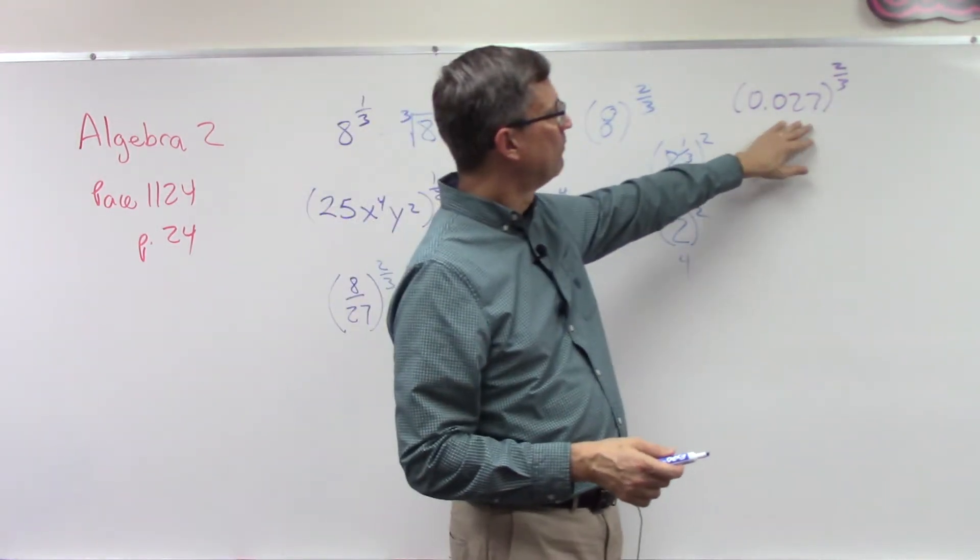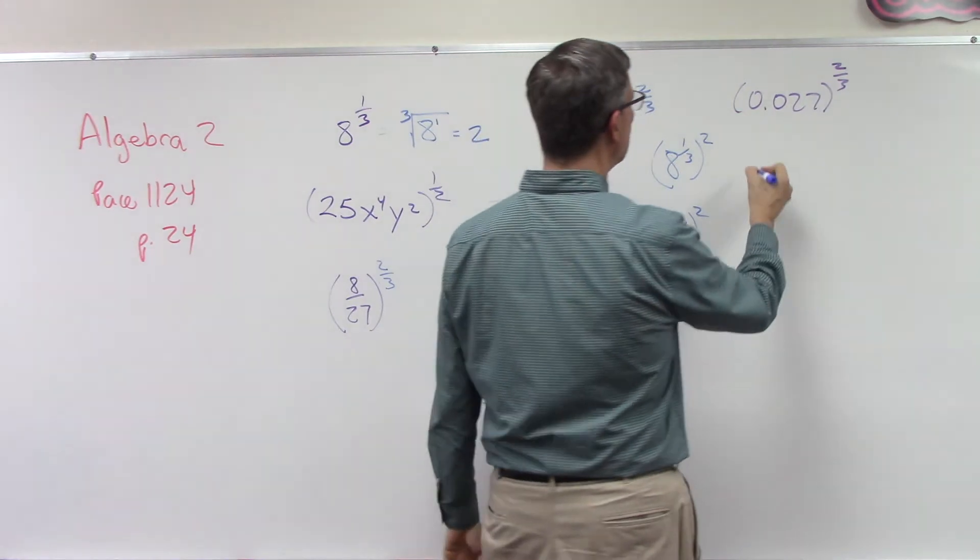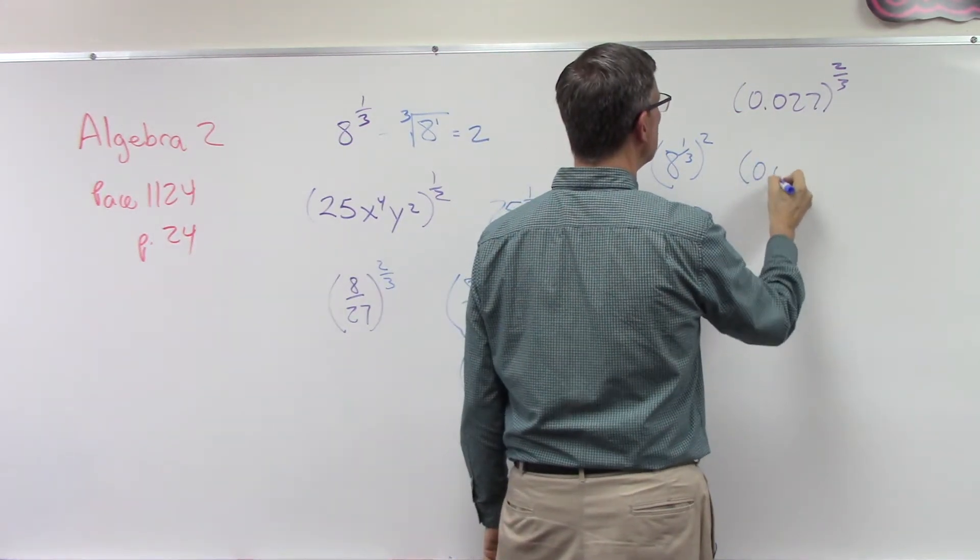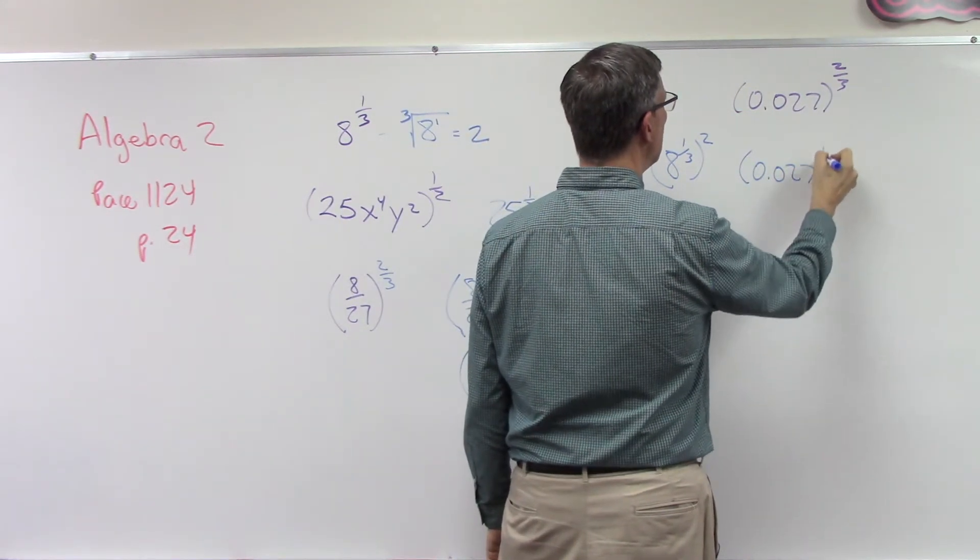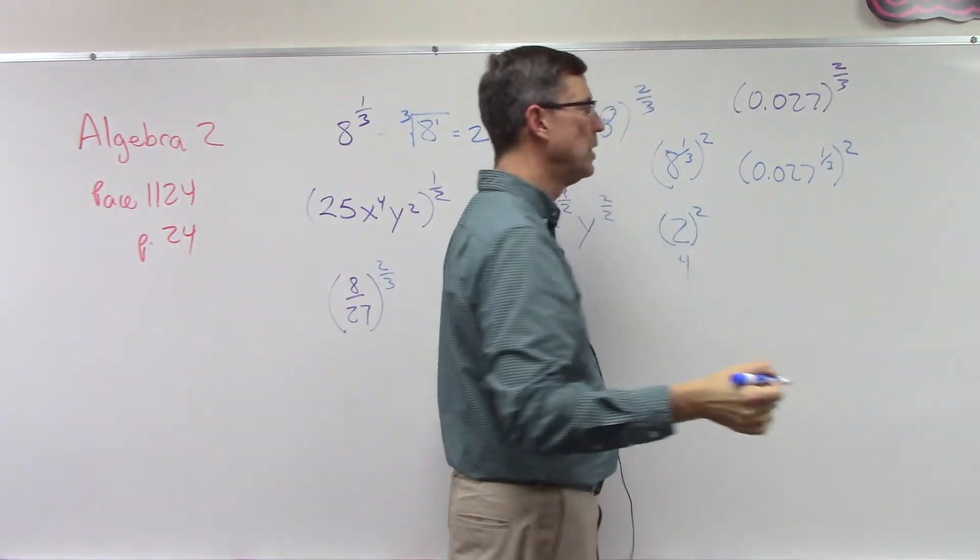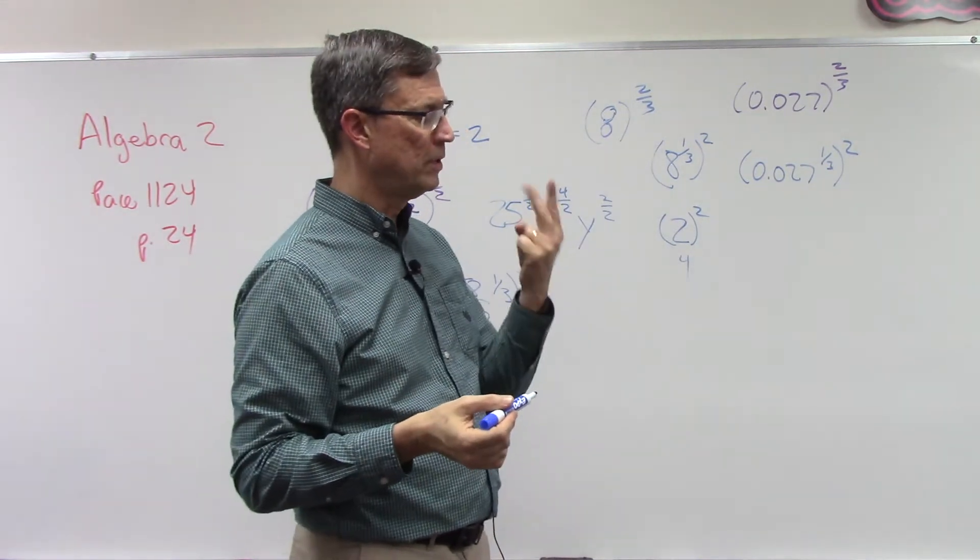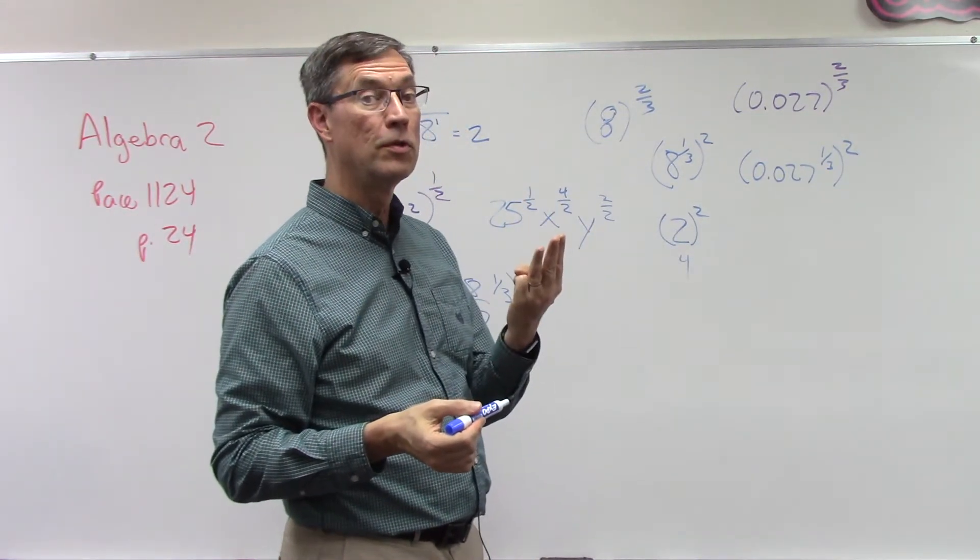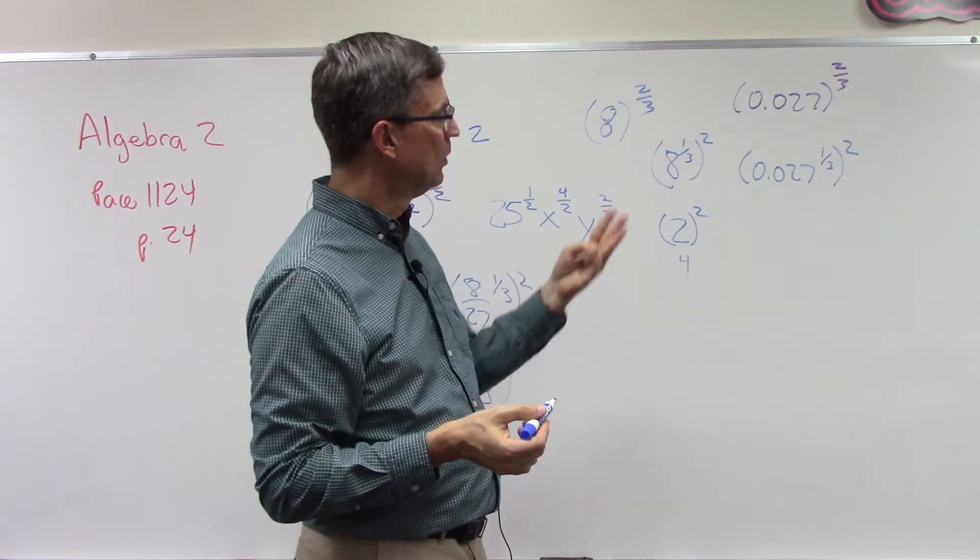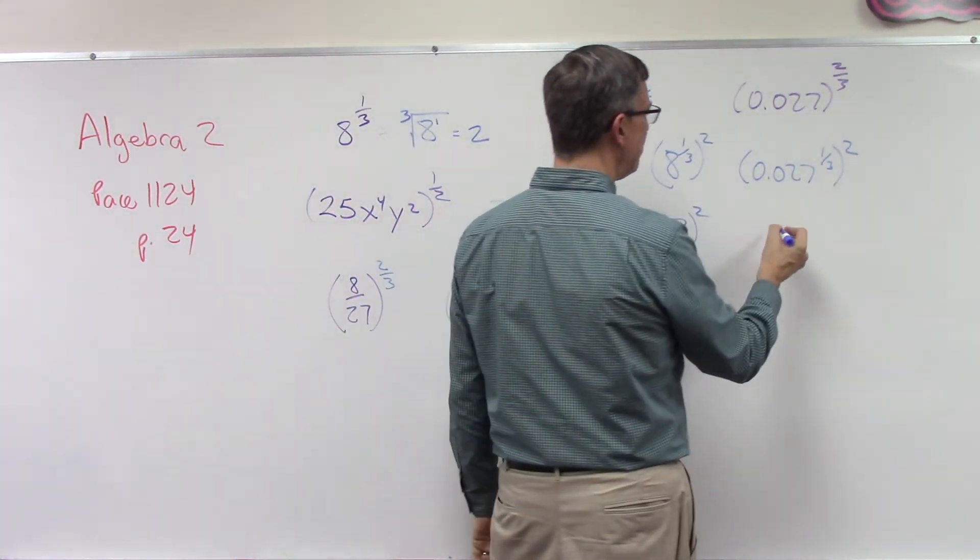Now we have one with a decimal. Same idea, let's break it apart. So 0.027, we'll raise that to the 1/3, and then that whole thing gets raised to the second power. Think about what decimal number times itself times itself three times would equal this decimal number here.